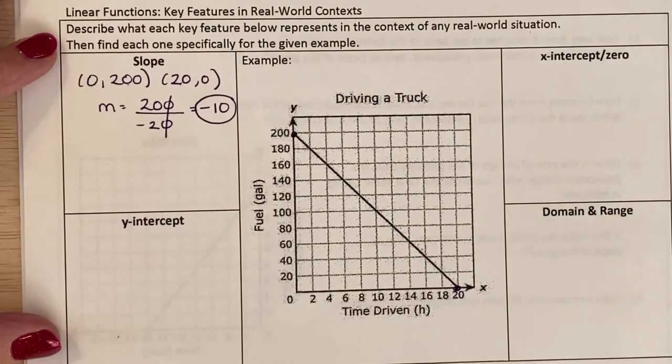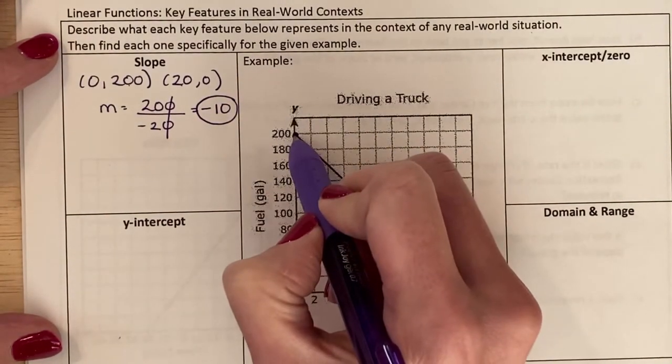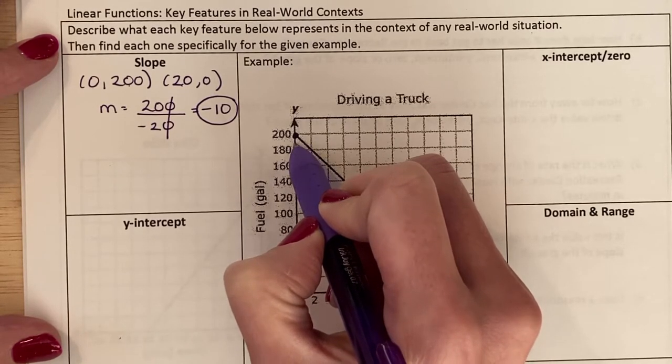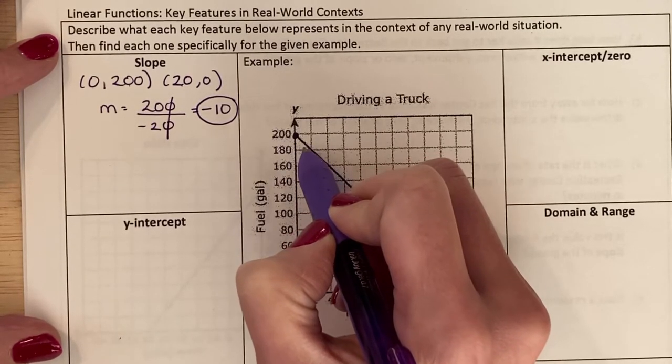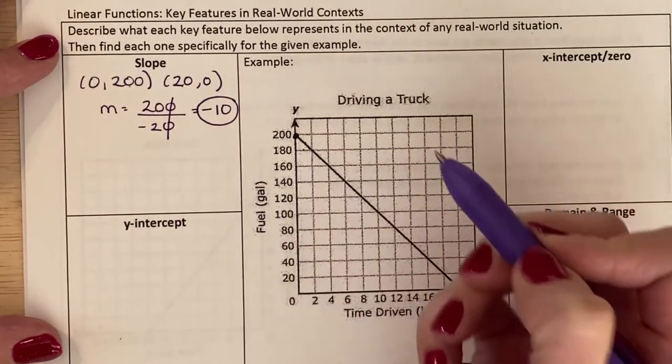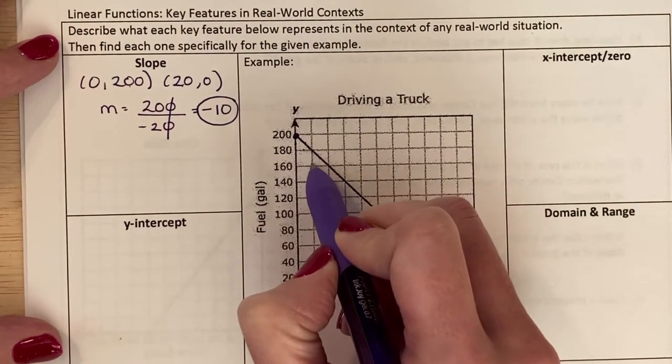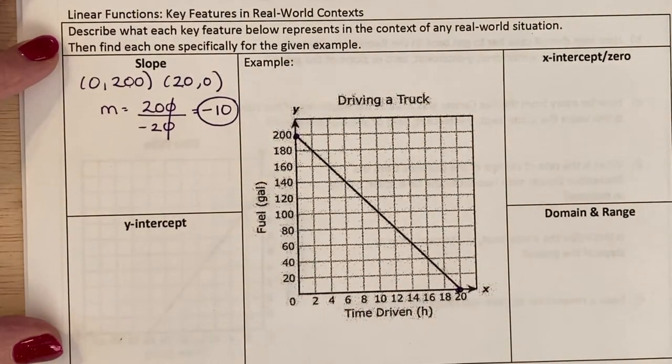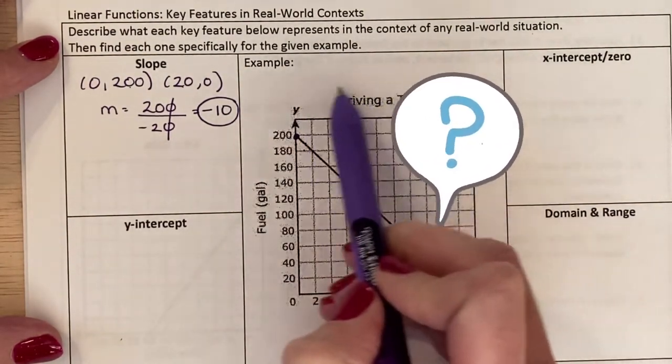That means every time I go down 10—this would be 200 to 190—I'm going over 1. Down 10 over 1. Or if I wanted to think of it, if I'm going down 20, I'm going over 2. But what does that mean in terms of driving a truck?